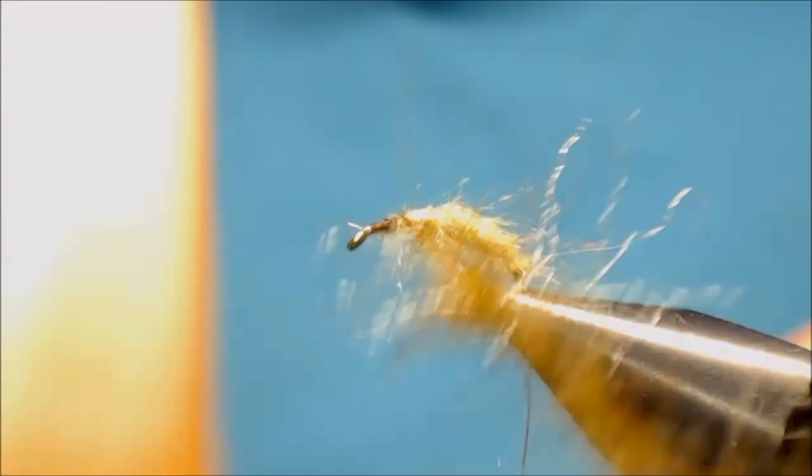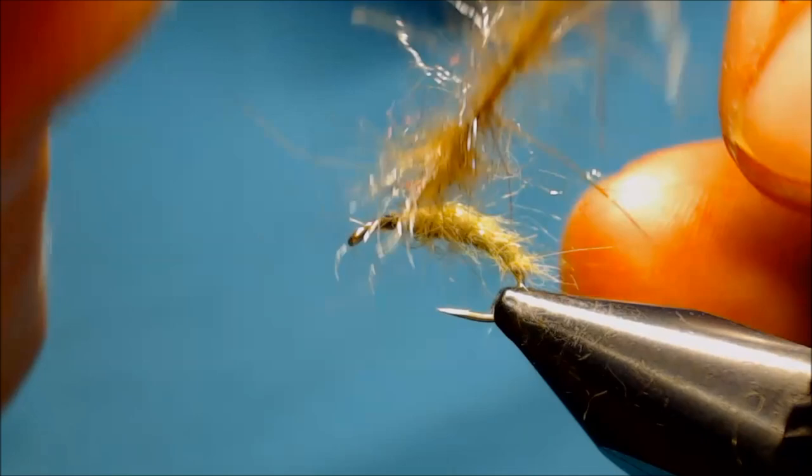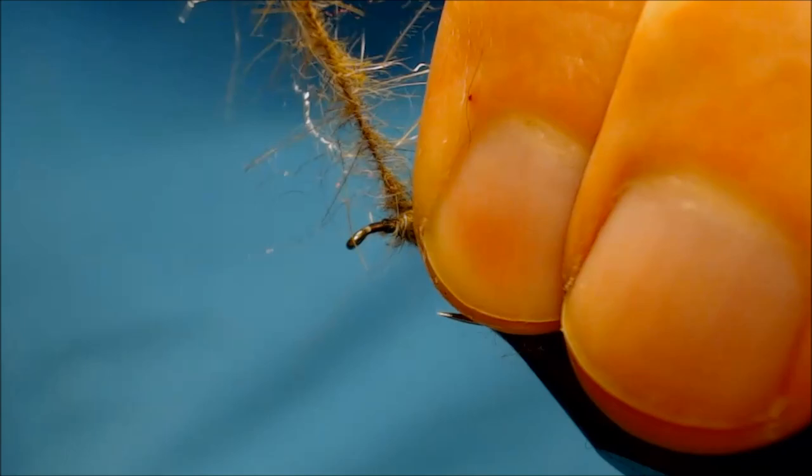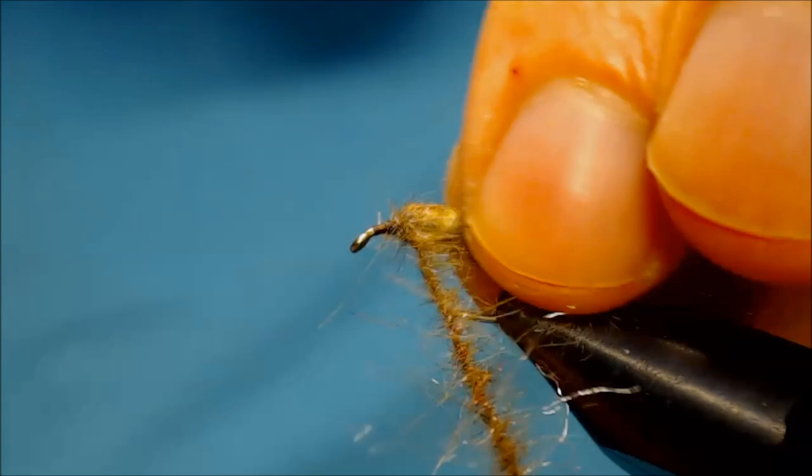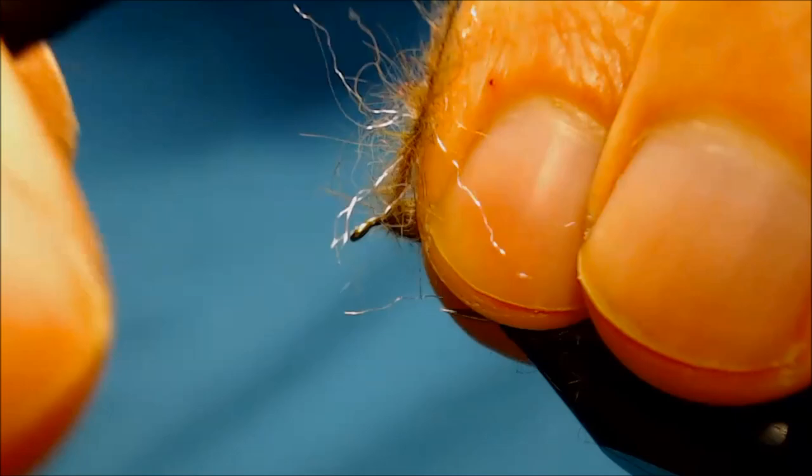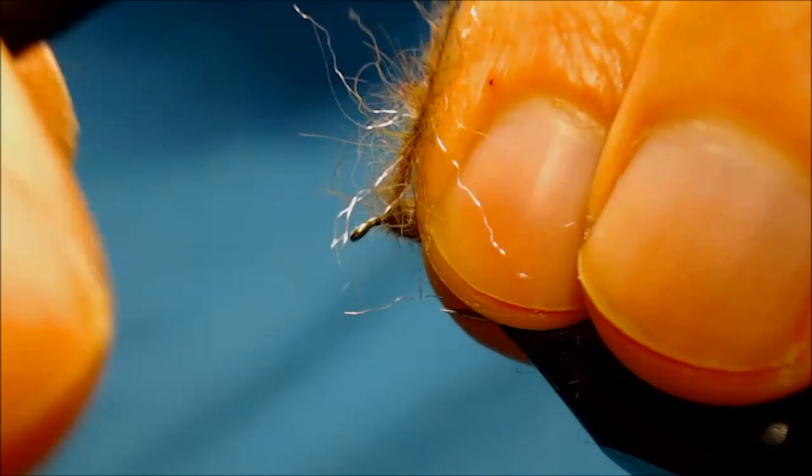With a chenille of dubbing, take it back to where the body starts. And then making tight turns forward, hackle the dubbing, pulling back each turn. And by doing this you build up the thorax. We'll finish with three turns. Then cut off your thread.